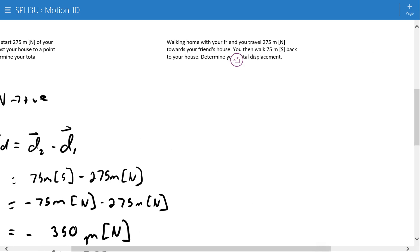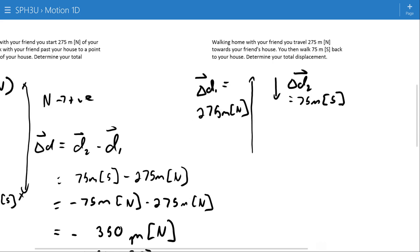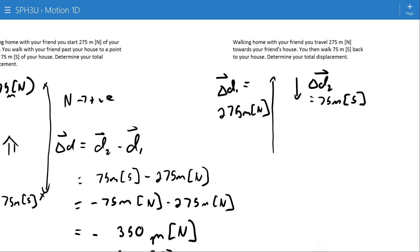Now, let's look at a scale diagram here to figure out what's actually happening and how it's different. So, what's happening this time is you're going up or north 275 meters. That's your delta D1. And then you're coming back south and near delta D2, 75 meters. From the diagram, we can see that these are very different situations as well.